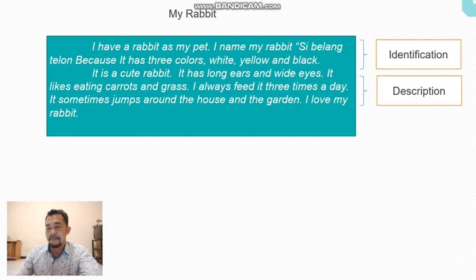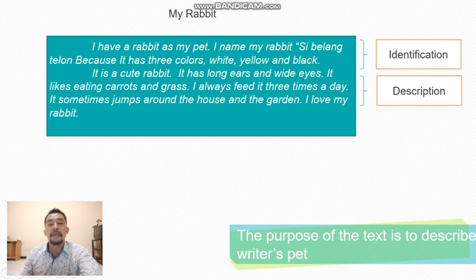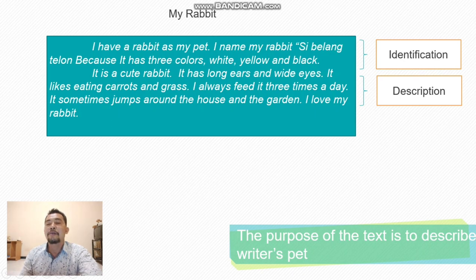The second example is about a pet animal — a rabbit. The title is 'My Rabbit'. The text reads: 'I have a rabbit as my pet. I name my rabbit Tricolor because it has three colors: white, yellow, and black. It is a cute rabbit. It has long ears and white eyes. It likes eating carrot and grass. I always feed it three times a day. It sometimes jumps around the house and the garden. I love my rabbit.'